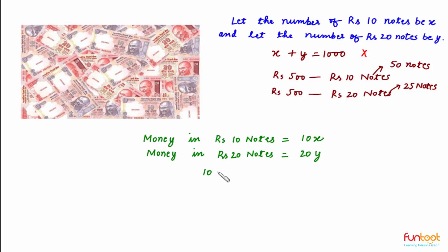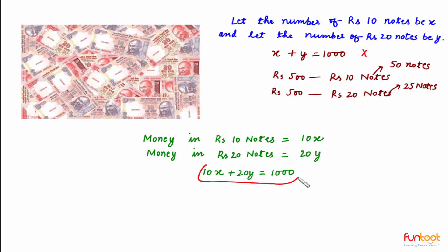So our linear equation in two variables will be: 10x + 20y = 1000. Now let's look at the graph of this linear equation in two variables which we have formed.